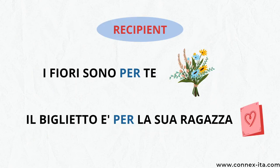Lastly, the preposition 'per' can also go before the person who is receiving something. 'I fiori sono per te' — the flowers are for you. 'Il biglietto è per la sua ragazza' — the ticket is for his girlfriend.